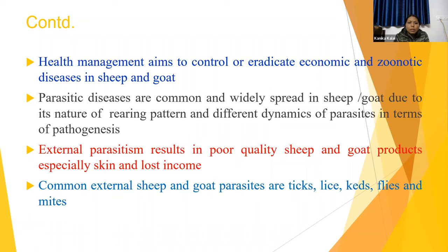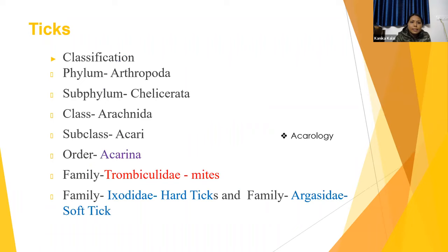The common external parasites of sheep and goats are ticks, lice, keds, flies, and mites. Today I am going to cover tick and mite infestation.